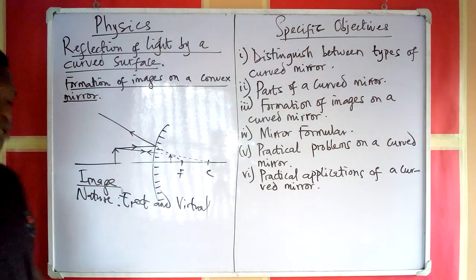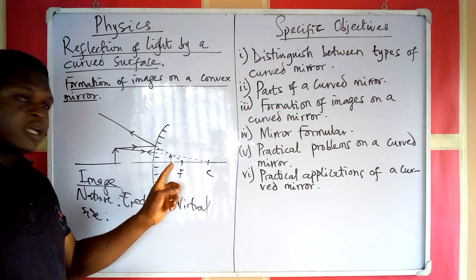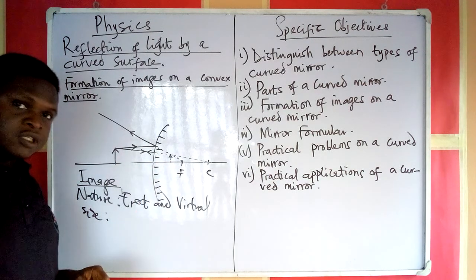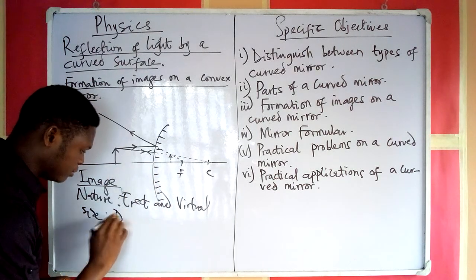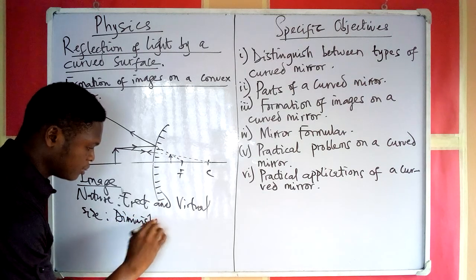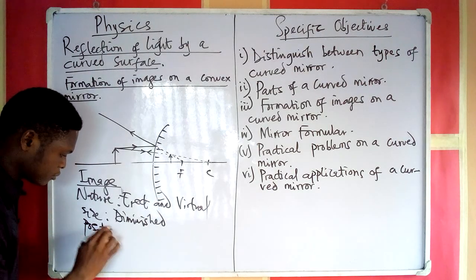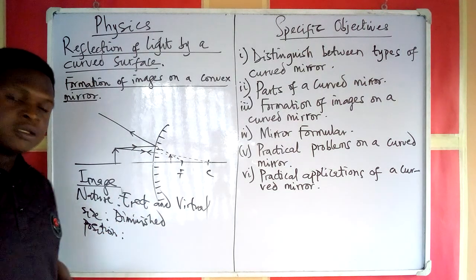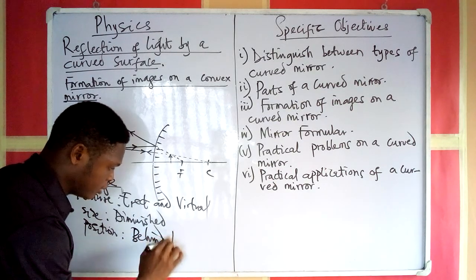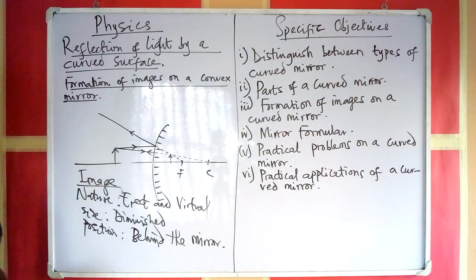So it is erect and it is also virtual. Talking about the size — if you compare the size of the object with the size of the image, you see that the image is smaller than the object, so we say that the size is diminished. Then talking about the position, we just say that it is behind the mirror. You can pause and take note of the properties of image formed by the convex mirror.